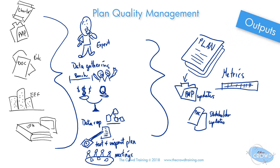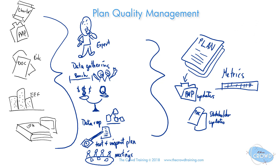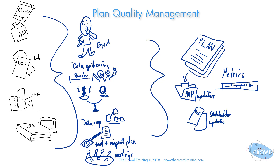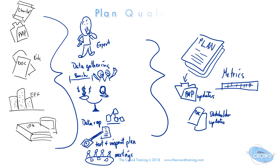That really concludes the inputs, outputs, tools and techniques of Plan Quality Management. As you can see, it's pretty straightforward, and that is Plan Quality Management in the sixth edition of the PMBOK.